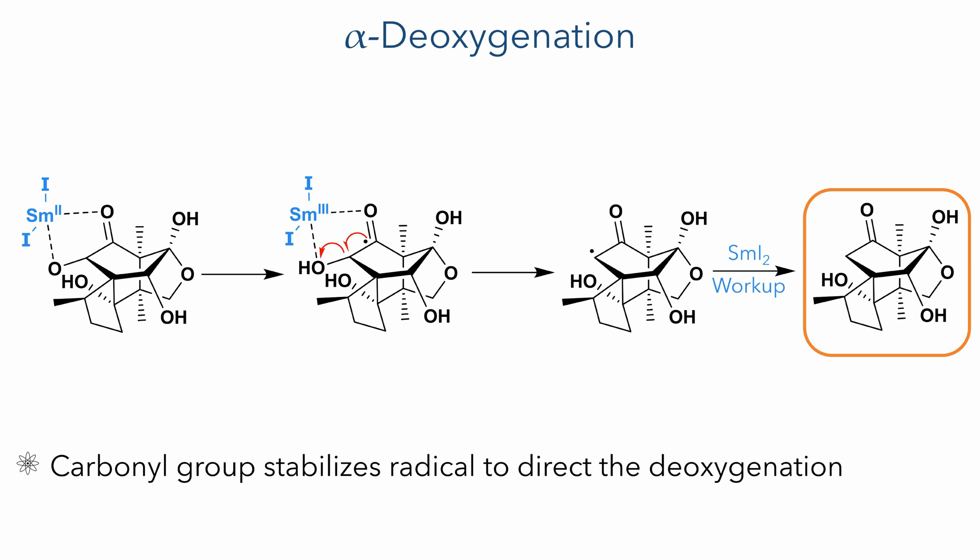The final step of the synthesis was an alpha-deoxygenation using samarium(II) iodide. This was selective for the hydroxyl group alpha to the ketone and did not affect the other hydroxyl groups present in the molecule. This is because the carbonyl group better stabilizes the radical: upon reaction, the radical first forms at the carbonyl centre and then reacts to eliminate the hydroxyl group, which is abstracted by the samarium, leaving a radical on the alpha position. Further reduction with another equivalent of samarium iodide and workup produces the target 11-O-Debenzoyl-Tashironin.